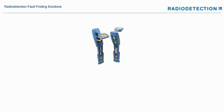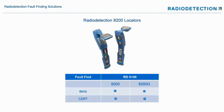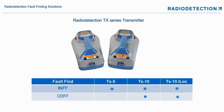The types of locator we can use: the RD7200 can be used for 8 kHz fault find. The RD8200 and 8200G can be used for both 8 kHz fault find and CD fault find. For transmitters, the TX5 has 8 kHz fault find, but if you want to use CD fault find, you must use a TX10 or TX10 bit.